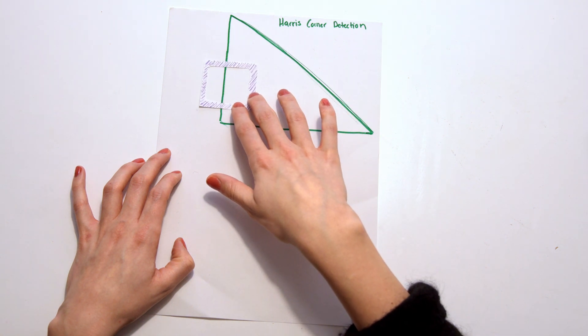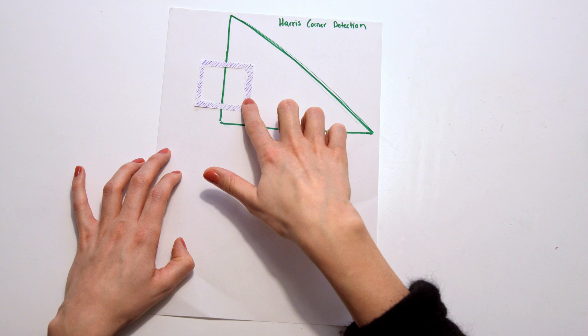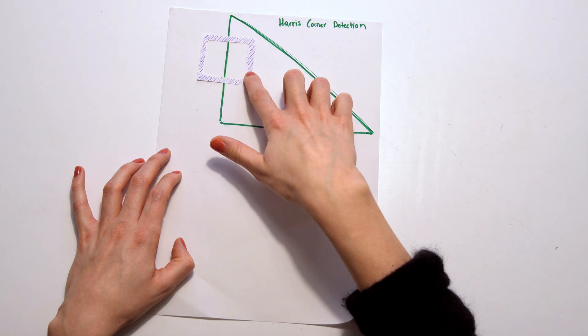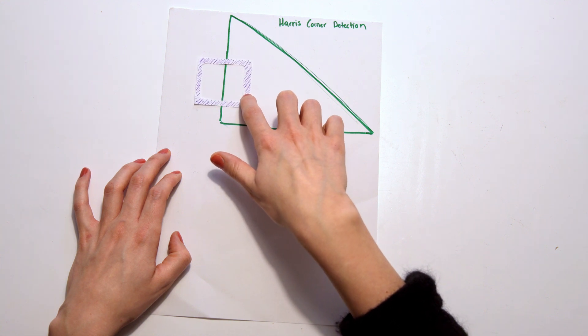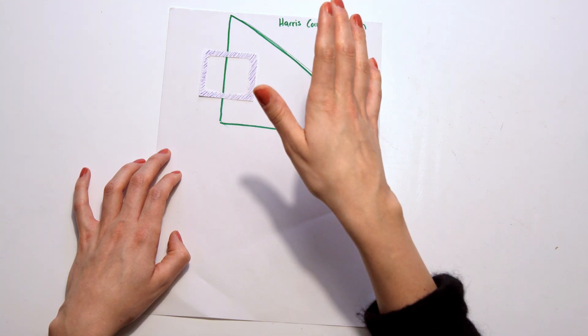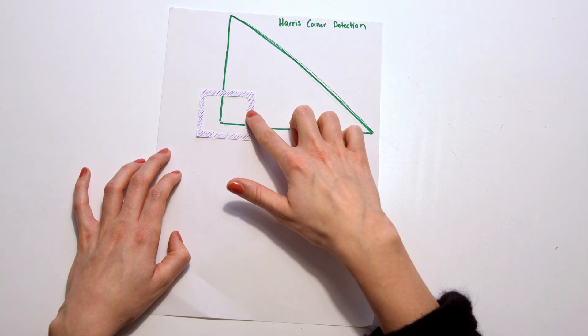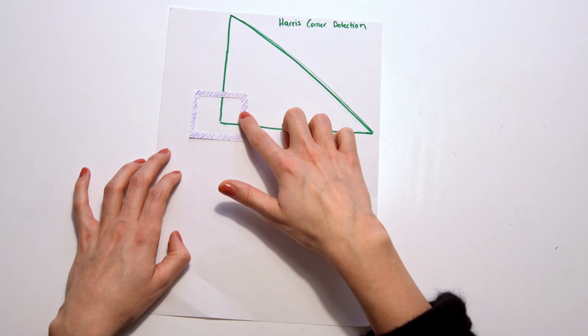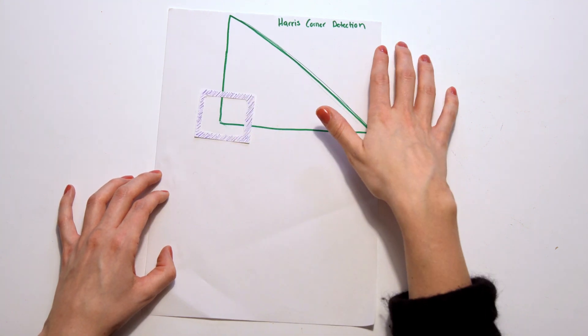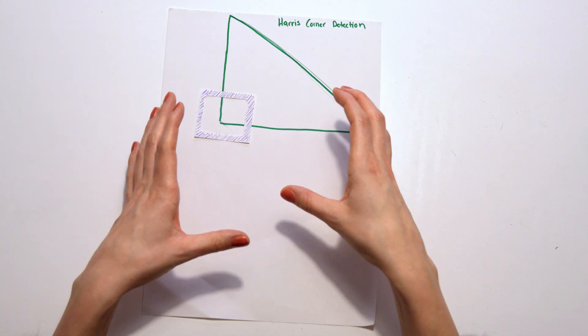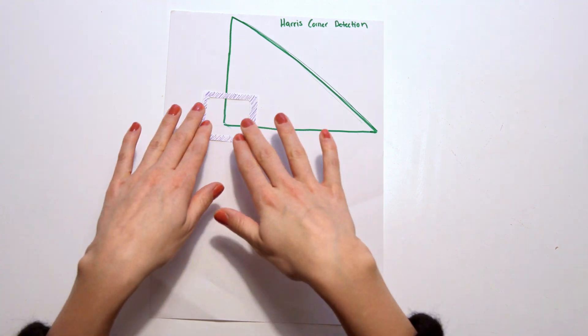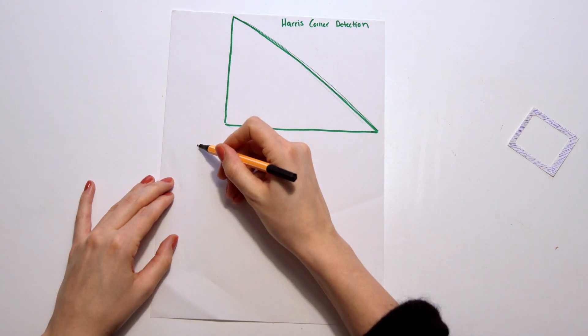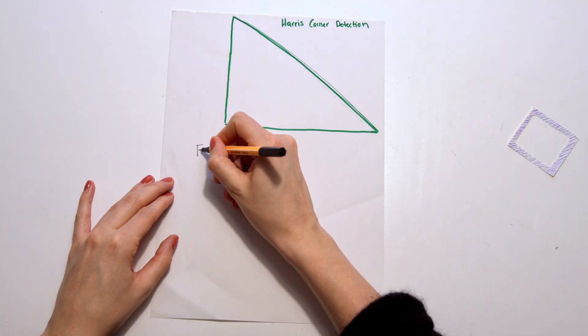However, if you move it here, along the axis there will not be any change, but there will be a change along the X axis for example. So here you can see that you have an edge. If you are in a corner, you will have changes in all of the different directions. And that's basically how the Harris corner detection understands if it is in a flat area, on an edge, or if it's in a corner.